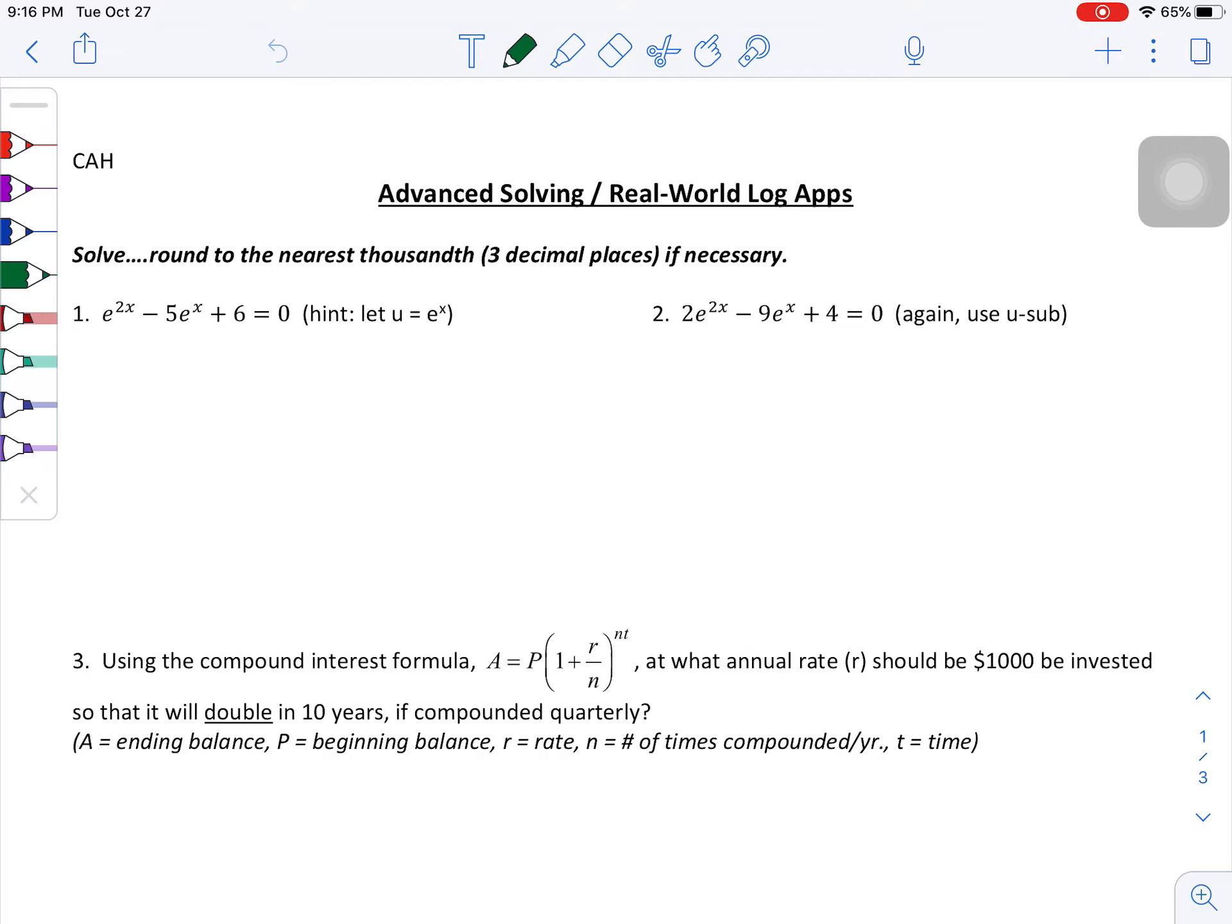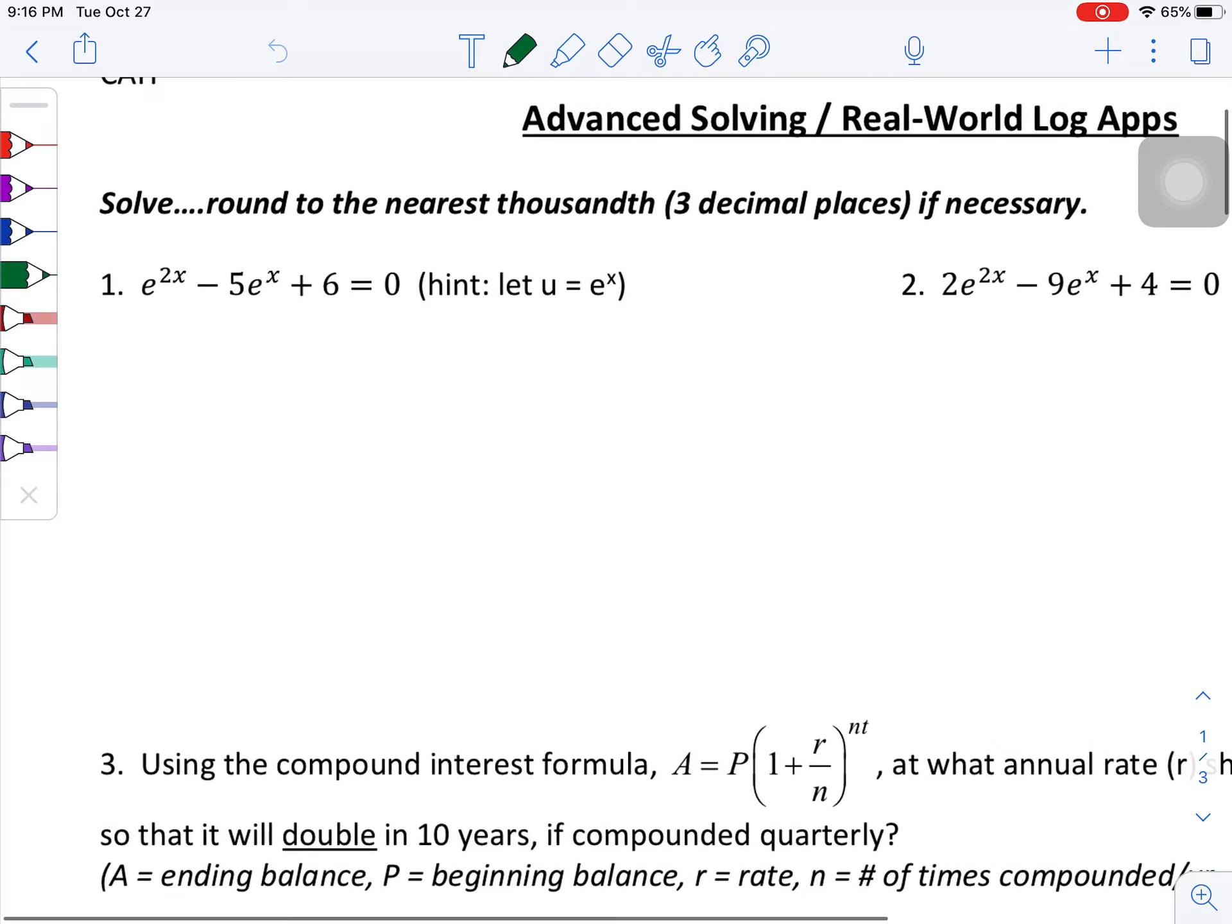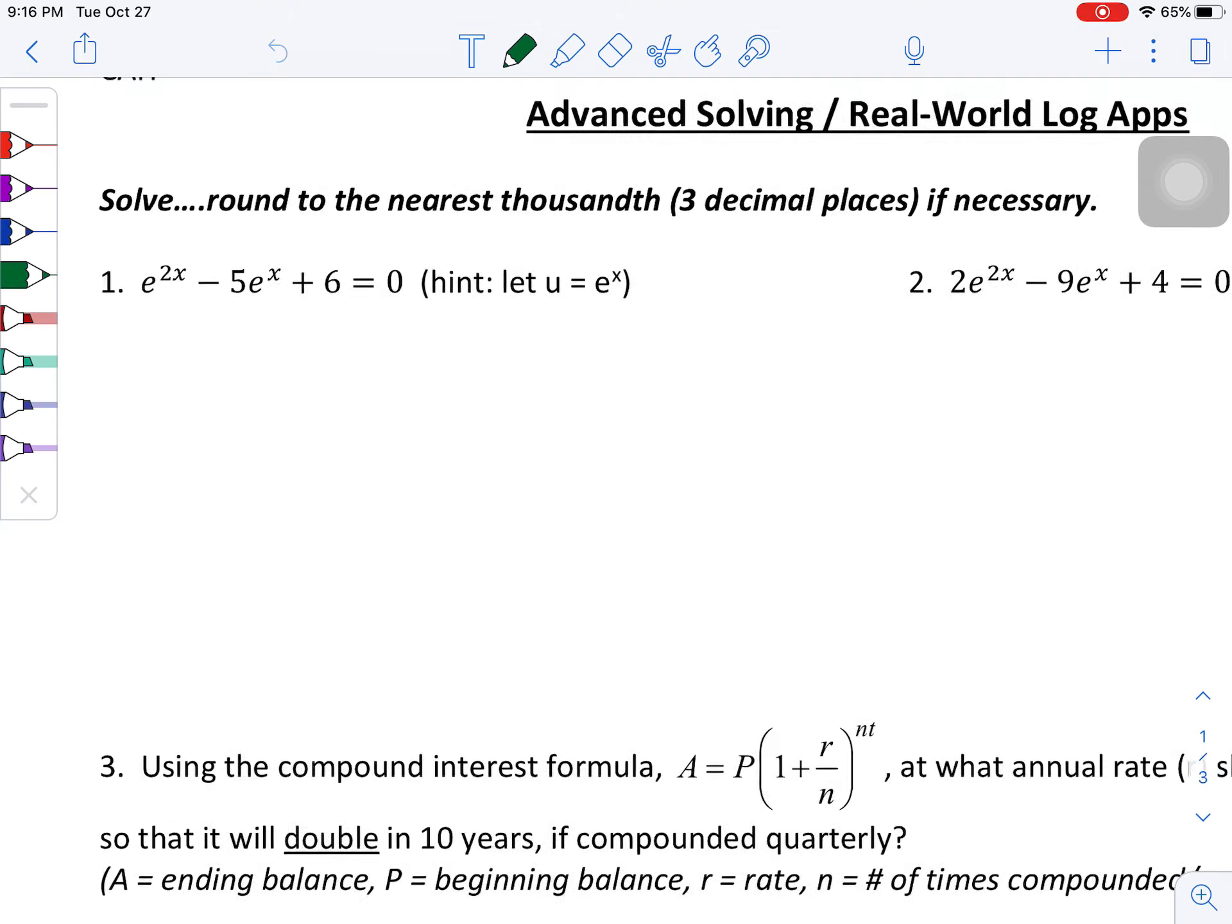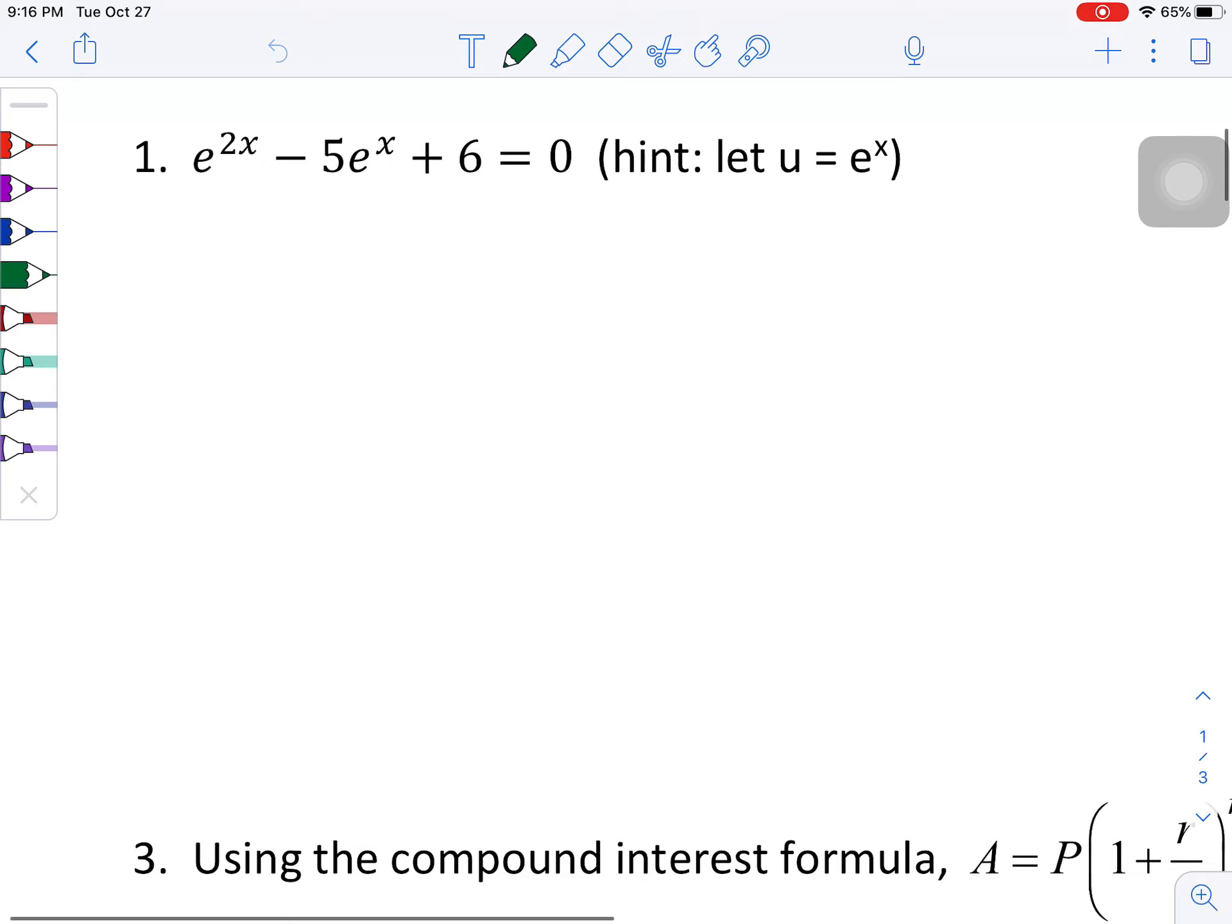So if we look at problem number one, it says to solve, round to the nearest thousandth, three decimal places if necessary. We've got some wacky looking equation, but one of the things we gave you a hint, and we said let u equal e to the x.